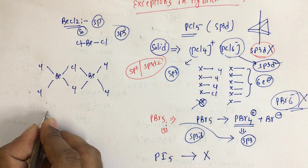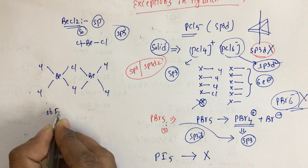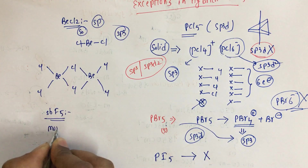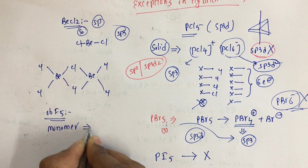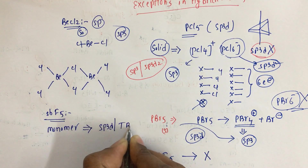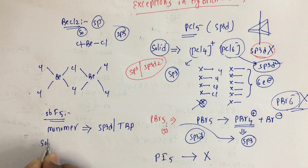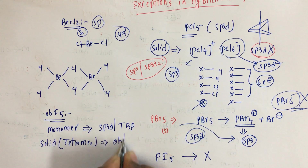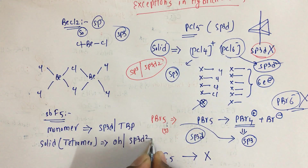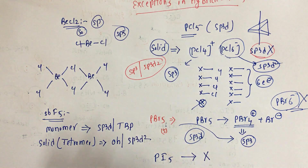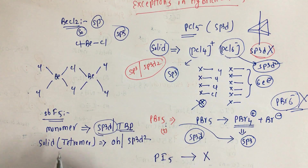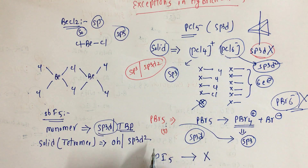Next is SbF5, which is very important. In the liquid state it exists as a monomer with sp3d hybridization and a trigonal bipyramidal shape. In the solid state it exists as a tetramer with an octahedral structure and sp3d2 hybridization.